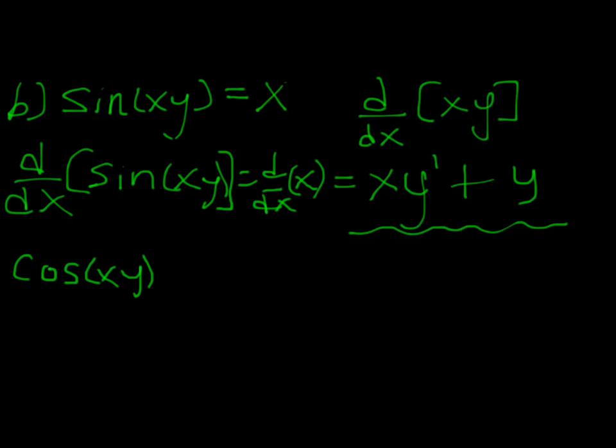And then what we'll do is we'll put that xy inside. But then of course we know we have to multiply that using the chain rule by the derivative of xy. So what we do is we multiply it by xy prime plus y. And then we take the derivative of x, which of course is just one.